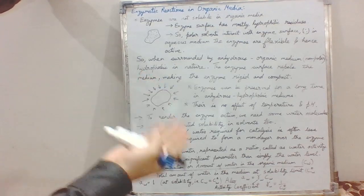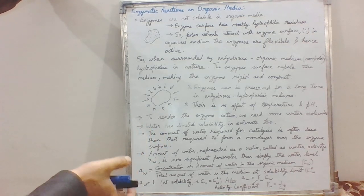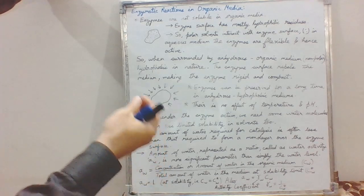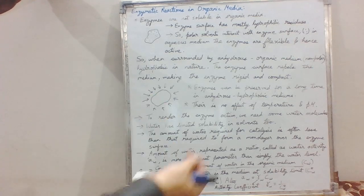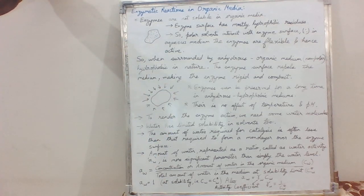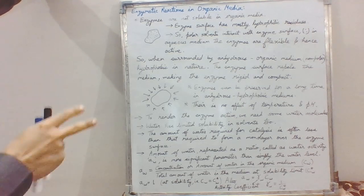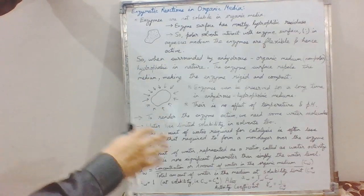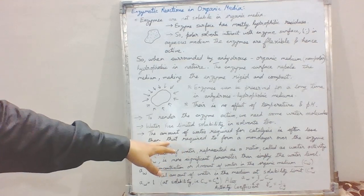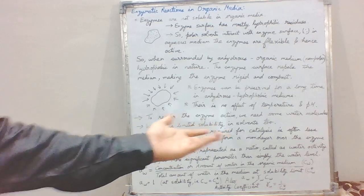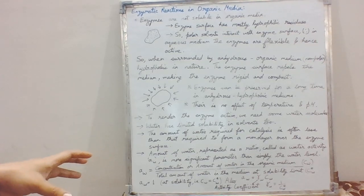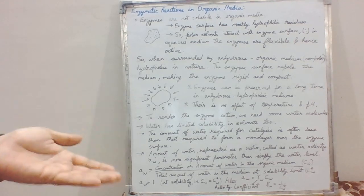Non-polar hydrophobic solvents do not attract water much, so they remove only a small portion of water from the enzyme. It has been observed that even a very small amount of water in non-polar hydrophobic solvents is capable of allowing the enzyme to perform its activity at optimum levels. The water required for catalysis is often so small that it cannot even cover the complete enzyme — it cannot form a monolayer over the complete enzyme surface.